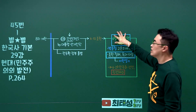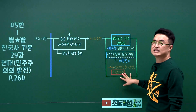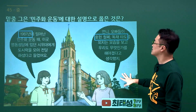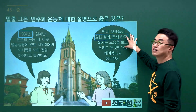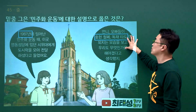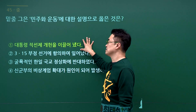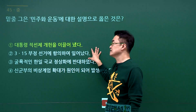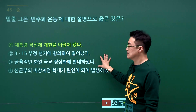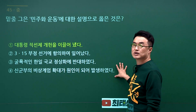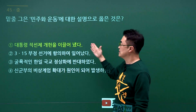6월 민주항쟁 문제입니다. 6월 민주항쟁의 결과로 직선제를 쟁취할 수 있었습니다. 문제에서 6월 민주항쟁을 보여주고 있고, 이에 대한 설명으로 직선제 개헌을 이끌었다는 1번이 정답입니다. 3.15 부정선거 항의는 4.19혁명, 한일 국교정상 반대는 6.3시위, 신군부 비상계엄 확대는 5.18 민주화운동입니다. 정답은 1번입니다.